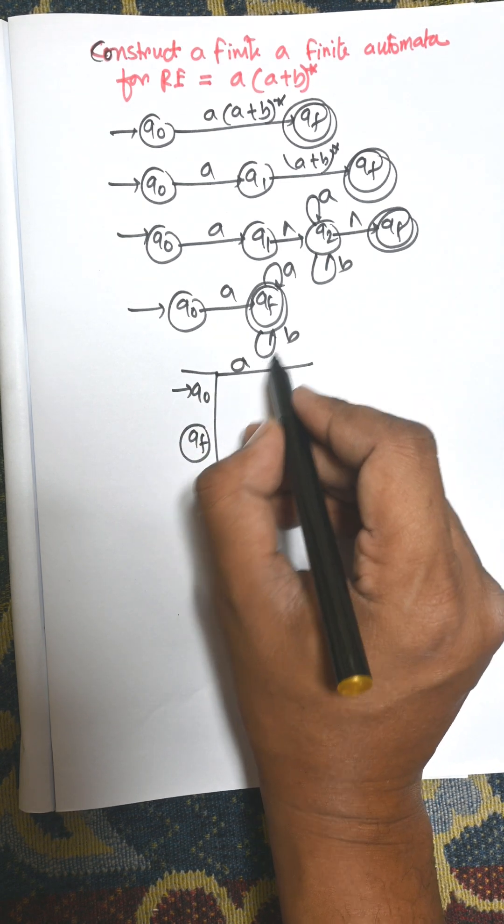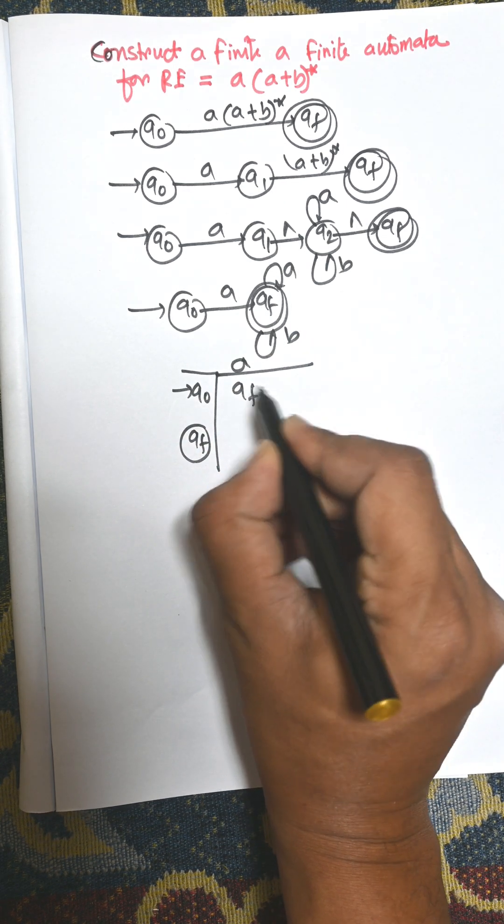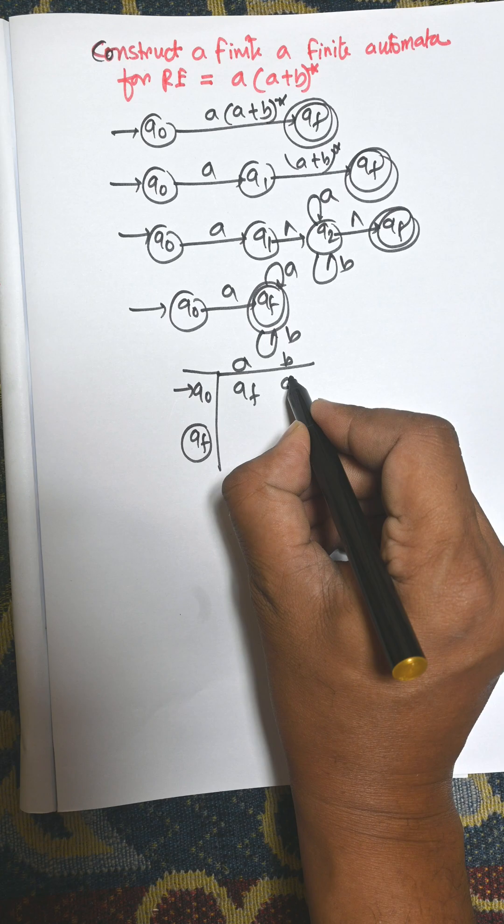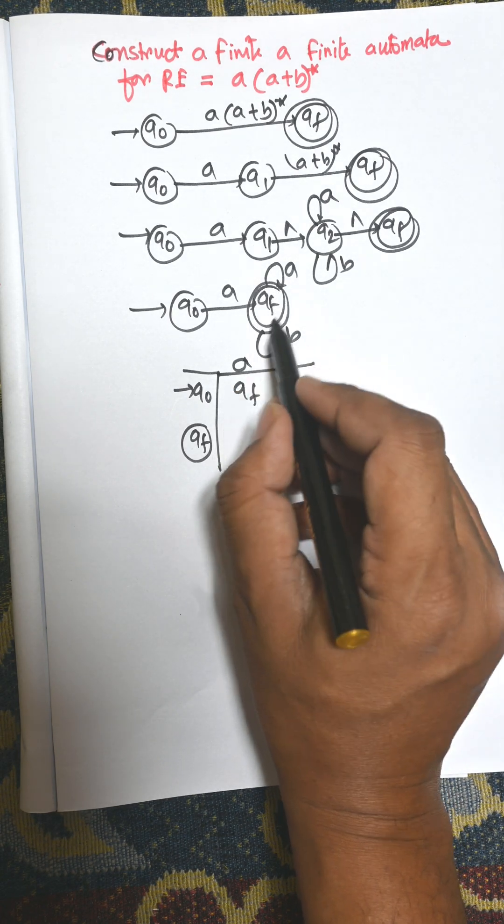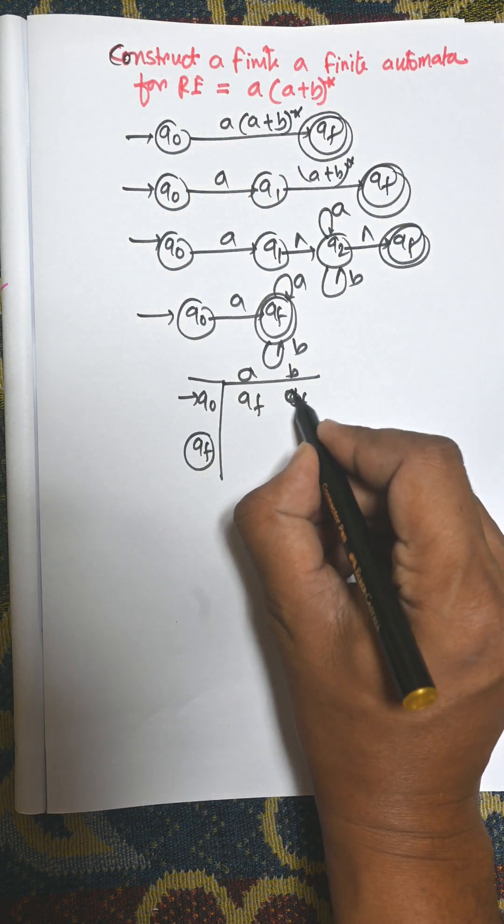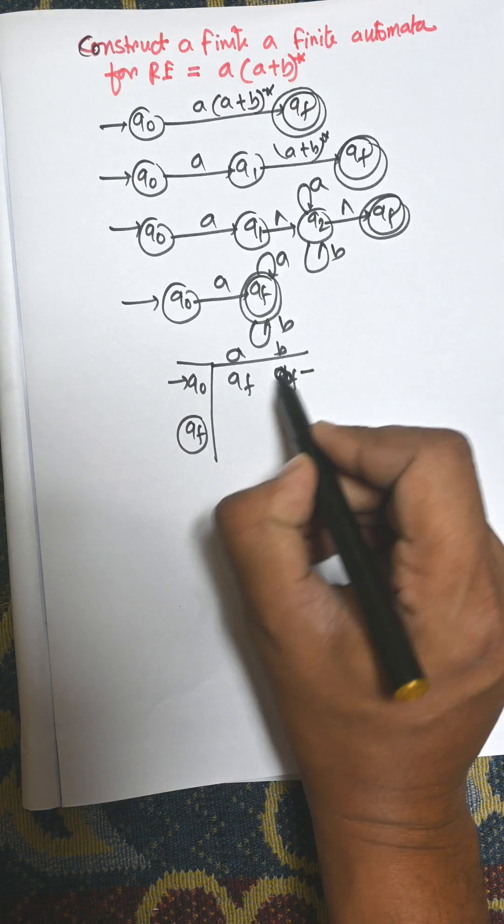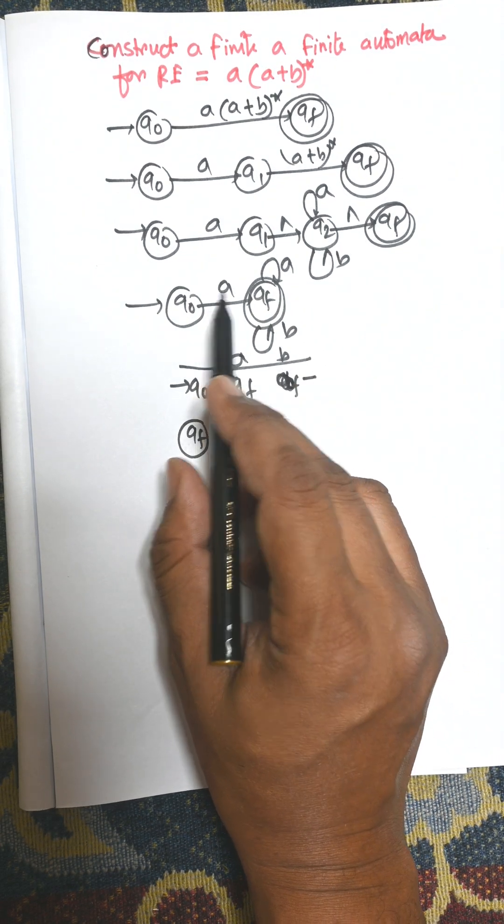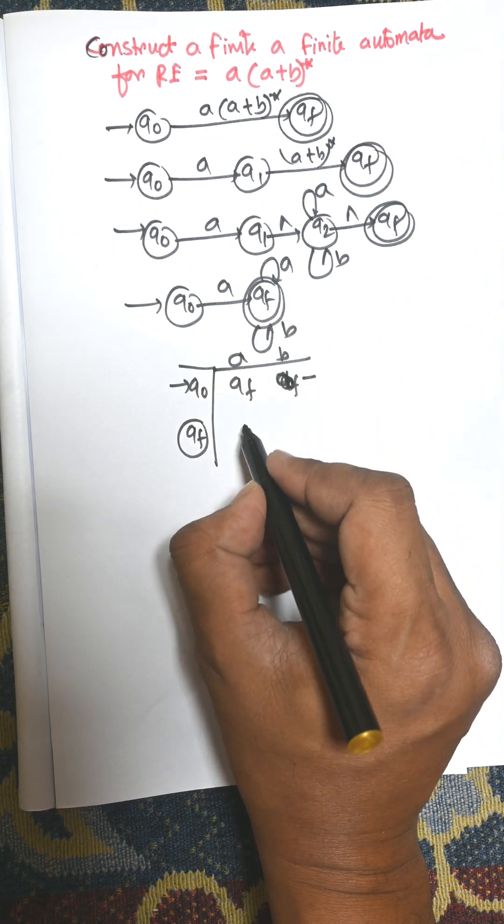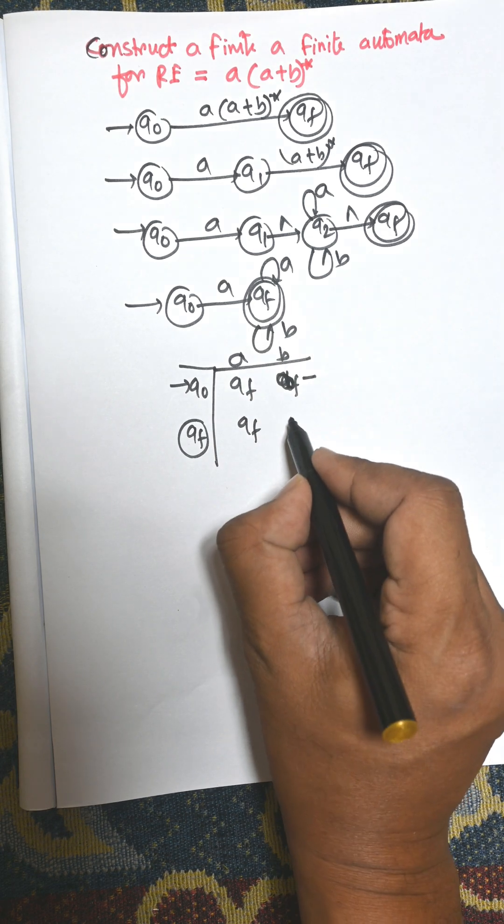There is A for Q0 to Qf, Q0 to B to Qf. For Q0 to B there is no state. For Qf to A there is Qf, for Qf to B there is Qf.